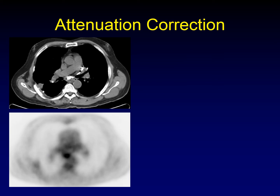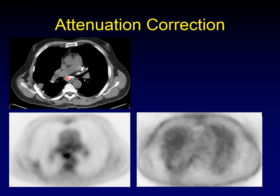Attenuation correction is very useful, but it also produces artifacts that you have to be aware of. For example, here's a PET-CT where you can see very focal uptake in the mediastinum just below the carina. But this is an artifact — it's produced by the calcium in this subcarinal node. When we look back at the non-attenuation corrected images, we can see there really is no super-physiologic uptake in that vicinity. This is why it's really important to always have the non-attenuation corrected images available when interpreting the attenuation-corrected images.